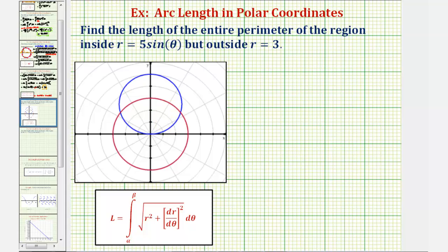Let's first identify the region, and then we'll find the length of the entire perimeter. The region that is inside the blue circle but outside the red circle would be this region here.